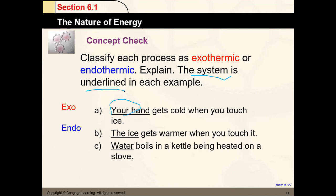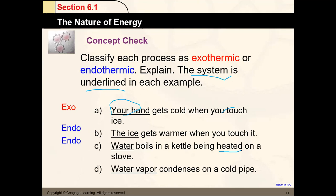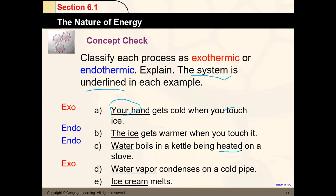Water boils in a kettle being heated on the stove — it has to absorb heat to boil, so that is endothermic. Water vapor condenses on a cold pipe: condensation means gas goes to liquid, decreasing temperature by losing heat — that is exothermic. Ice cream melts: going from solid to liquid, lower temperature to higher temperature, the system absorbs heat — that is endothermic.